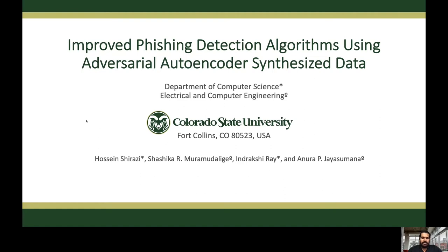The lack of data is a critical issue in phishing detection and also many other networking related problems. In our work, we propose an adversarial autoencoder based data generation technique to improve phishing website detection. We show that the synthesized samples improve the detection accuracy to a significant level. The proposed data generation method further widens opportunities in other research contexts that suffer from the lack of data for training models or any rigorous analysis.